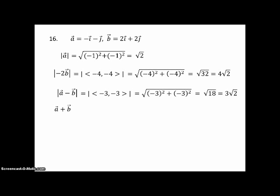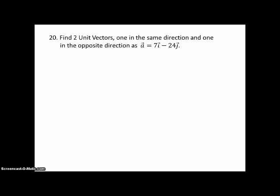Then they want just the sum of a plus b. In this case this is going to be a vector. So we add the components, negative 1 and 2 in both cases. And we get i plus j.